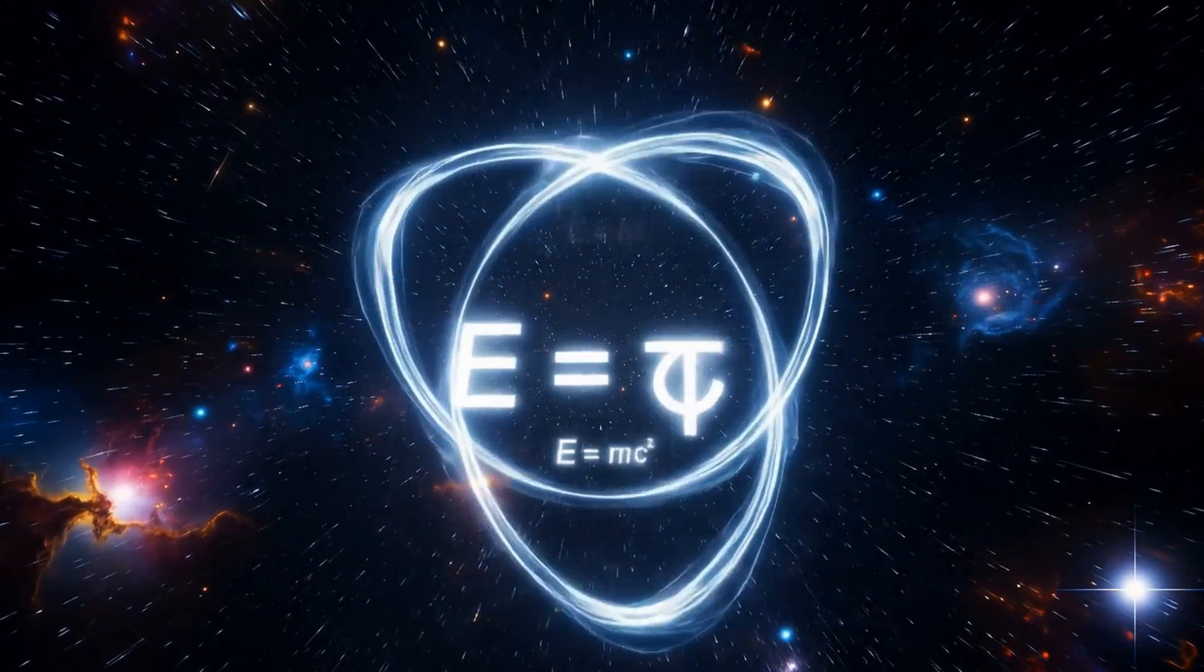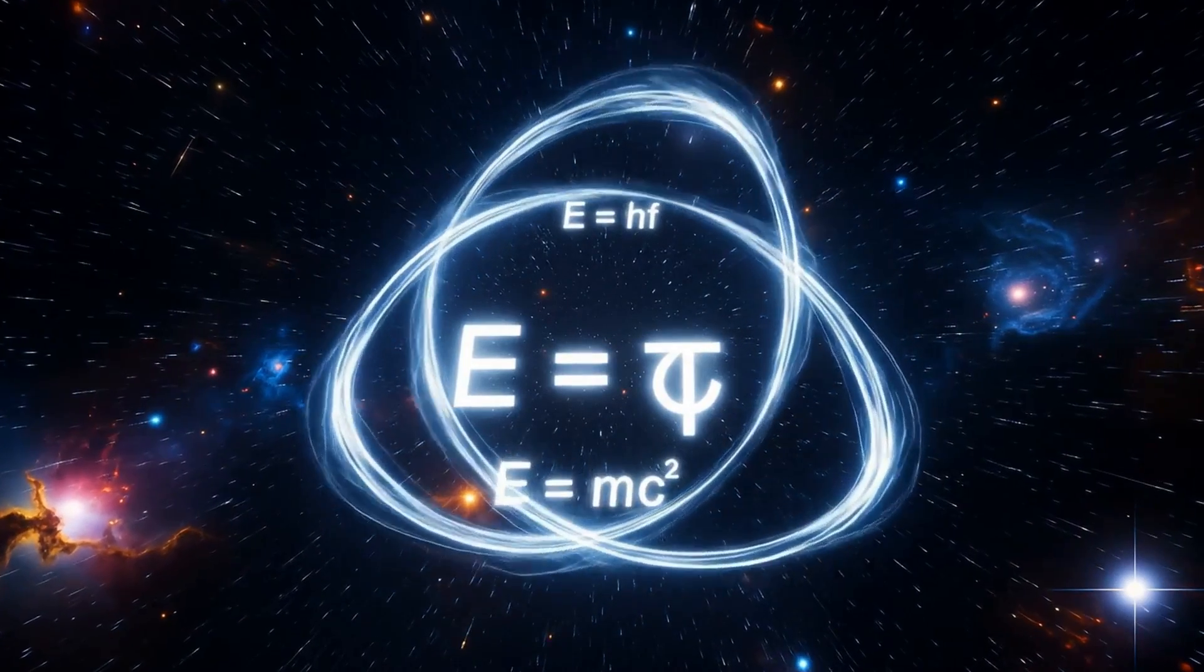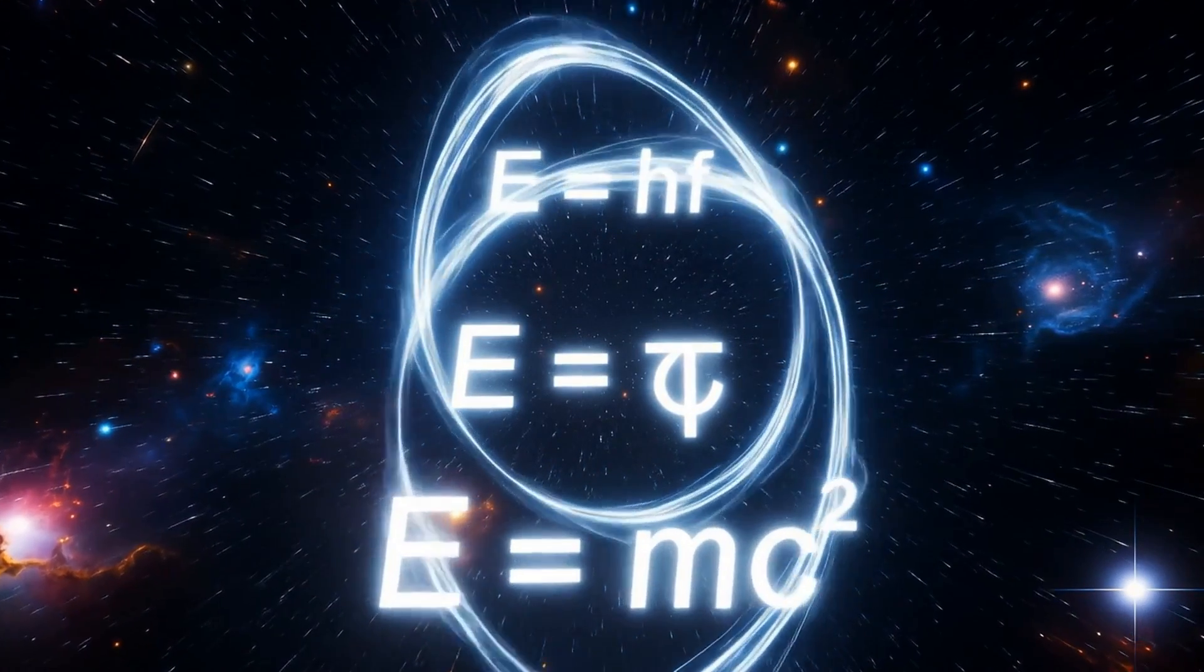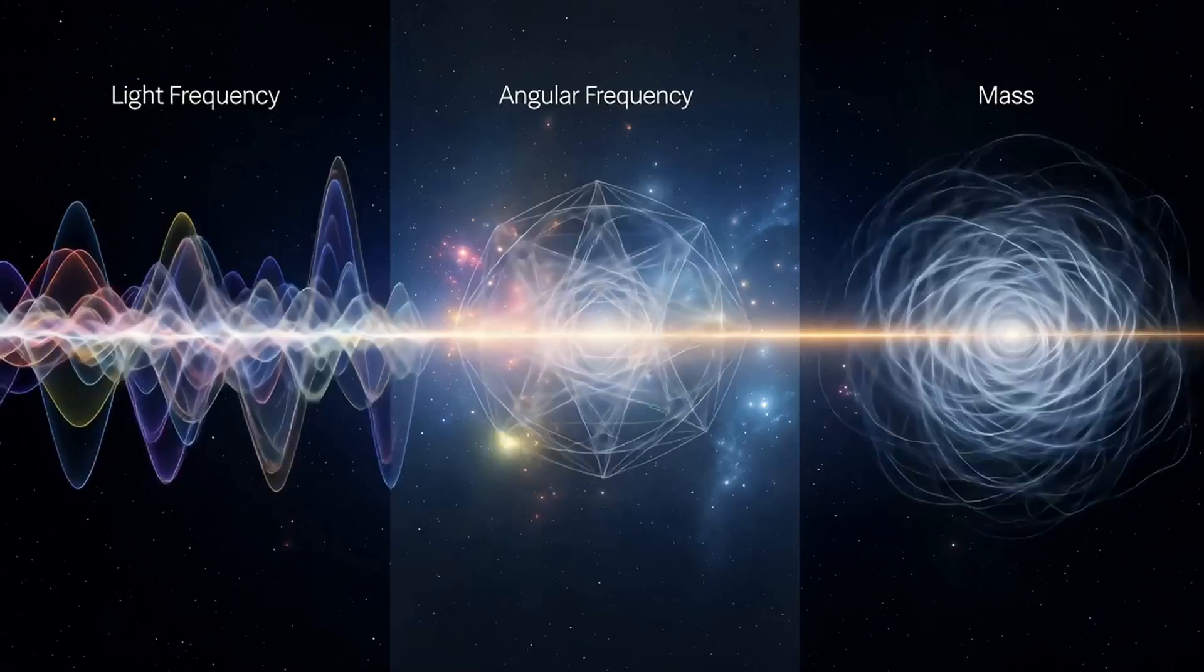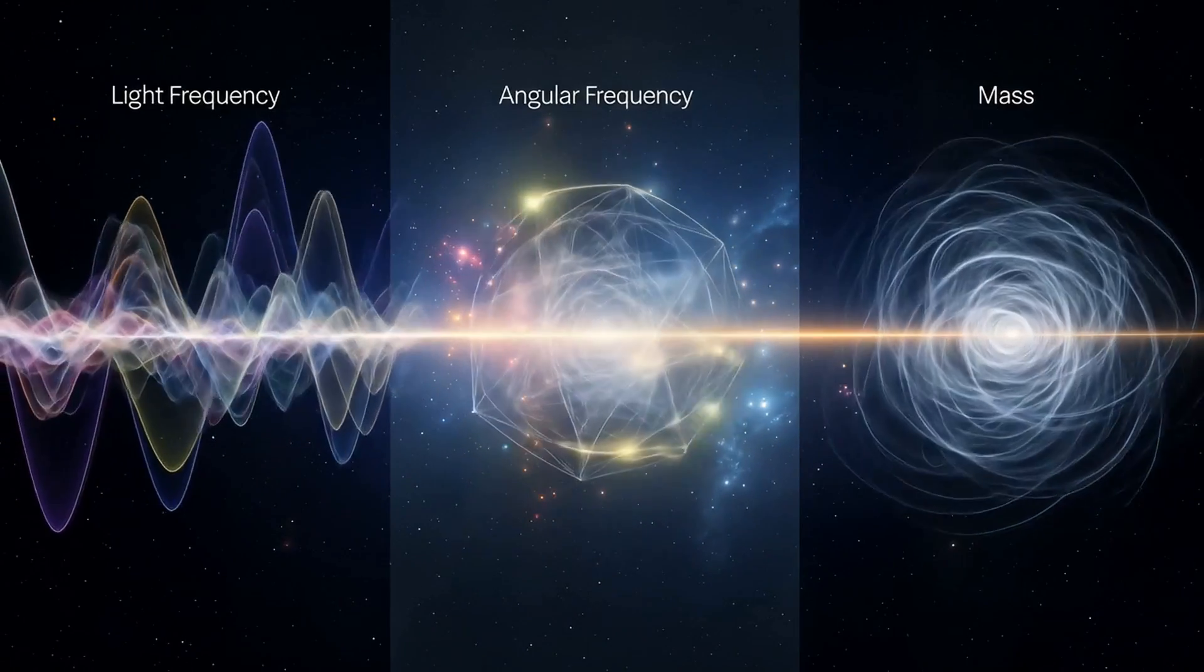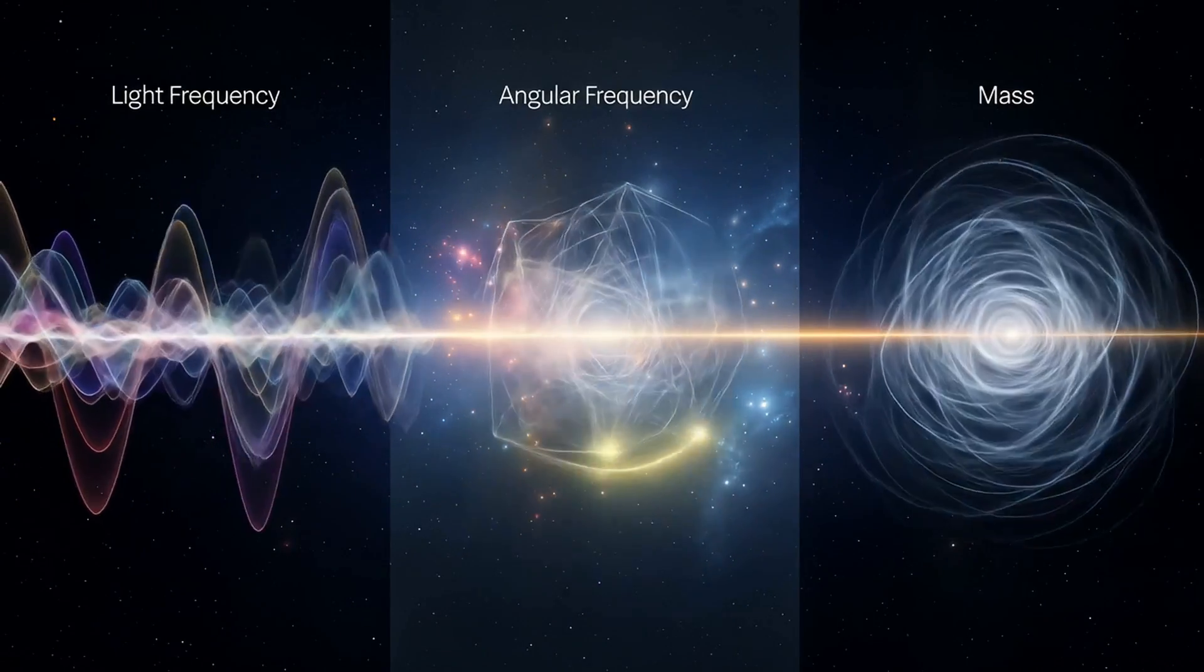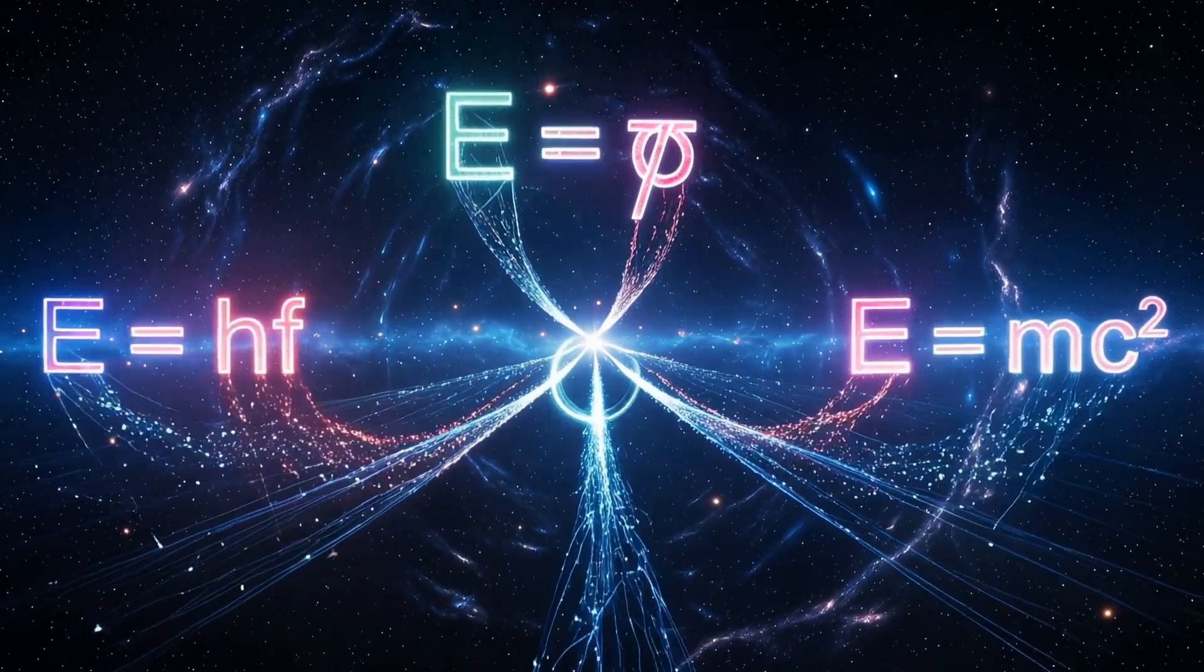There are three ways of describing this projection. Energy equals h times frequency. Energy equals h bar times angular frequency. Energy equals mass times the speed of light squared. Each is a lens on the same structure.